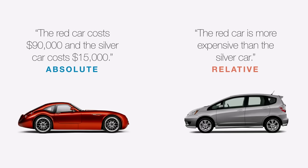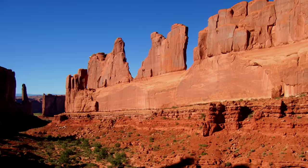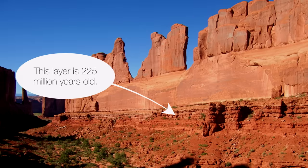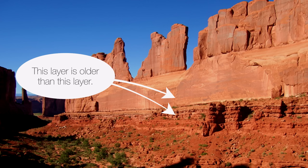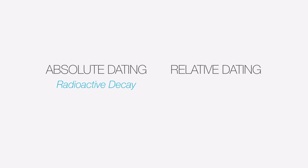What about in terms of rock layers? Here I have some layers of sandstone out in the American Southwest. If I were to say this layer of rock is 225 million years old, that's an absolute dating statement because I have a number, I'm being specific. But if I were to say this layer of sandstone is older than this layer, that would be an example of relative dating. In the study of Earth's history, we're going to use both absolute dating through radioactive decay and relative dating through geologic sequencing.